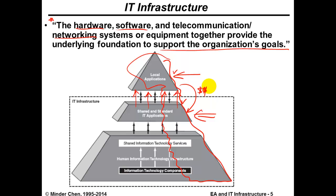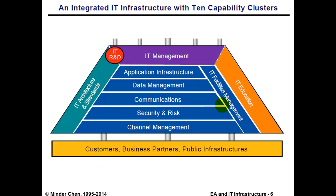If you have a solid IT infrastructure, it's easier to build specific applications. Many companies may not have a solid IT infrastructure when they try to build an application and need to invest in beefing it up. Since infrastructure is shared across the enterprise, the investment in IT infrastructure should be evaluated and justified separately — otherwise it's not fair to charge it all to a single line-of-business manager for a local application development effort. The IT infrastructure capability clusters include: application infrastructure, data management, communication, security, risk management, channel management, IT facility management, and defined IT architecture conforming to standards, also enabling work with outside partners.